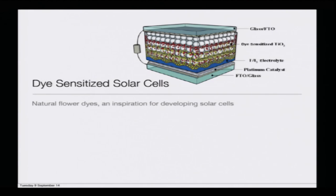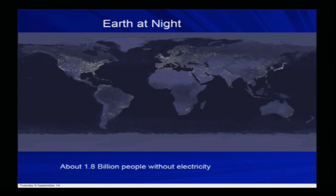You can draw the inspiration from natural flower dyes — there is a small cartoon shown here which we will discuss later. But first, understand the basic principle of dye-sensitized solar cells. To appreciate this, note that currently about 1.8 billion people are without electricity. If we are really dreaming of a sustainable society, we have to ensure that all people across the planet receive sufficient electrical energy to sustain their livelihood.